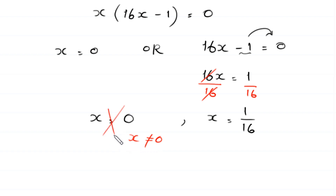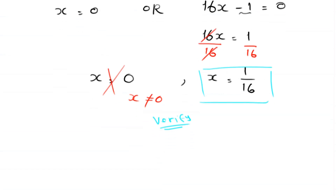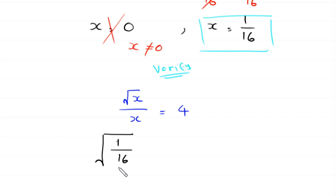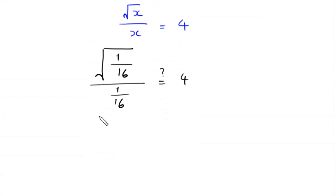Now we verify the value x equals 1 over 16 in the original equation: root x over x equals 4. Substituting gives square root of 1 over 16, divided by 1 over 16, equals 4. The square root of 1 over 16 is 1 over 4, so we have 1 over 4 divided by 1 over 16 equals 4.